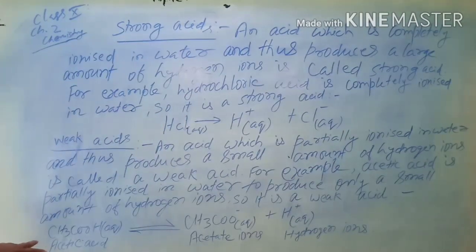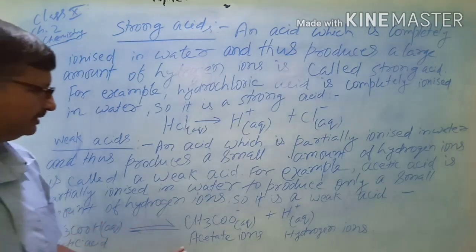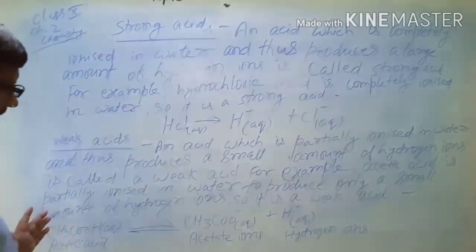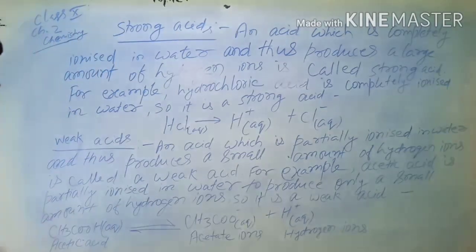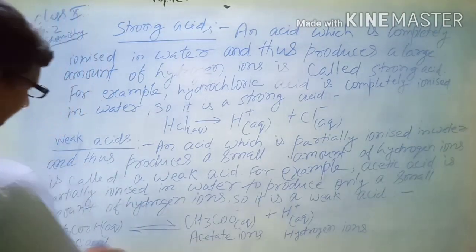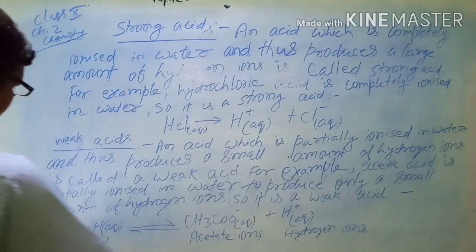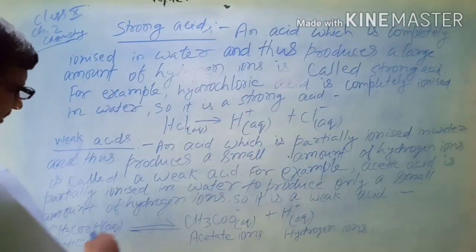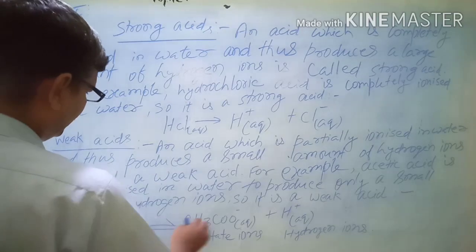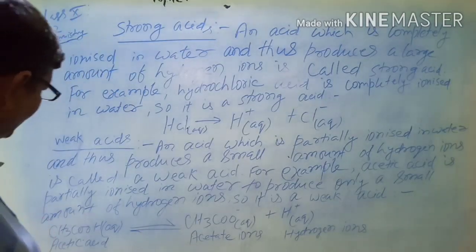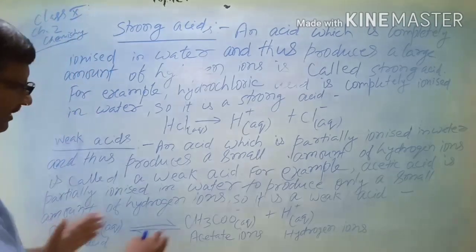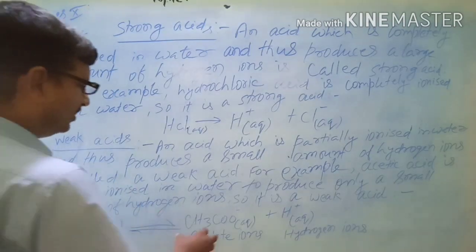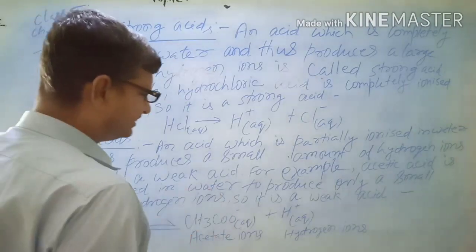Acetic acid dissociates into acetate ions and hydrogen ions. Here, we find that acetic acid and acetate ions are in equilibrium. This reversible process means acetic acid and acetate ions reach equilibrium, meaning some quantity of acetic acid re-associates into acetate ions.